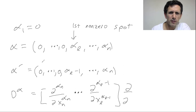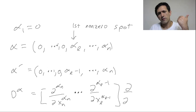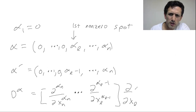All the derivatives before the L spot are zero — everything there is zero — so you're not taking any derivatives before the L-th spot because all those entries are zero. When any of the numbers in your multi-index are zero for the differential operator D^α, it just means you don't differentiate there.